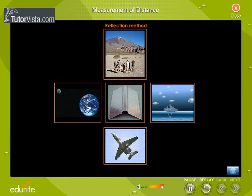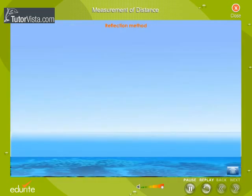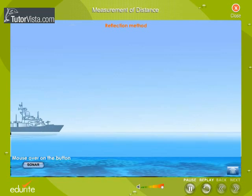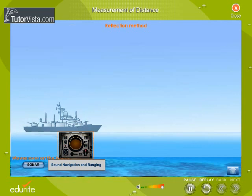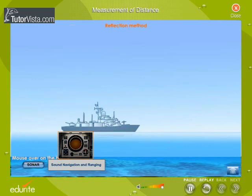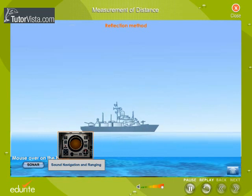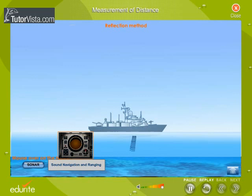Here we are going to discuss how reflection method is used to find the depth of oceans. Determination of the depth of an ocean. The depth of an ocean is determined with the help of sonar. Sonar uses ultrasonic waves to detect and locate objects underwater.